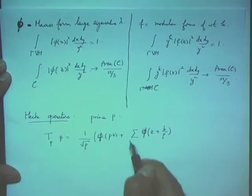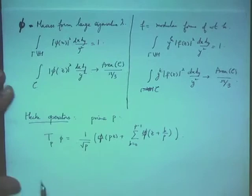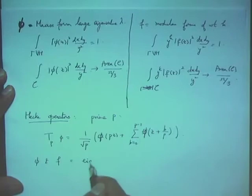The Hecke operator T_P takes your Maass form and gives you 1 over square root of P times phi of Pz, plus the sum over b from 0 to P minus 1 of phi of (z plus b) over P. You can define the Hecke operators for every integer n, also taking the weight K into account. In both cases, you want to choose phi and f to be eigenfunctions for all the Hecke operators.